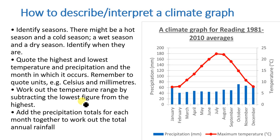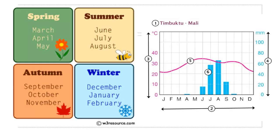To describe or interpret a climatic graph: first, identify seasons — there might be a hot and cold season, or a wet and dry season. Then quote the highest and lowest temperature and precipitation and the months in which they occur, remembering to state your units — Celsius for temperature and millimeters for rainfall. Work out the temperature range by subtracting the lowest figure from the highest. Add the precipitation total for each month to work out the total annual rainfall.